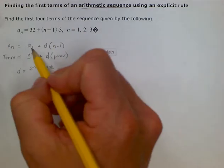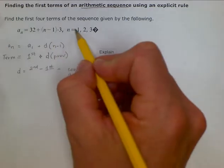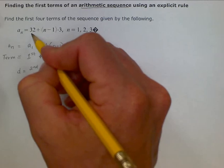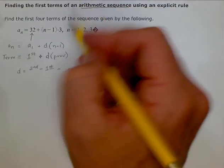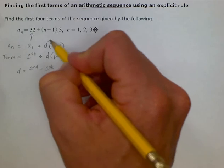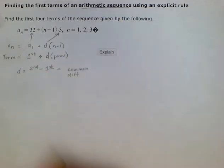And we can already look to see if n equals 1. We can already see what our first term is, and we can also see our common difference, which is going to be 3.